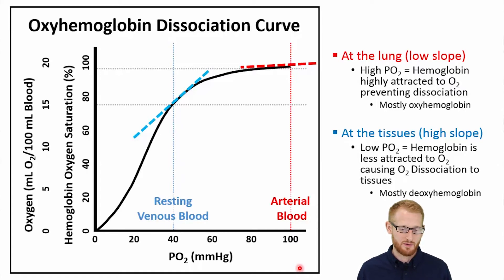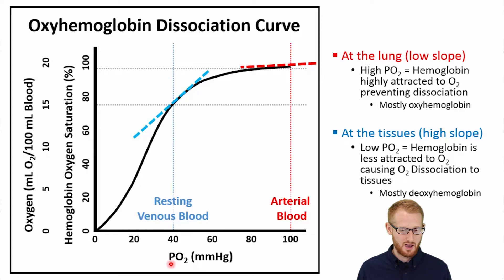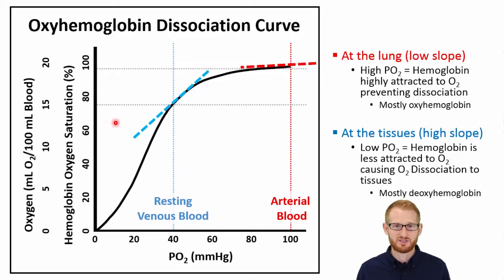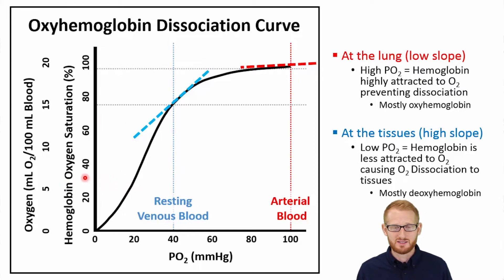When you start going further down this curve into lower partial pressures of oxygen, the slope gets steeper and steeper. Looking at the same 20 millimeter difference — from 40 to 20 mmHg — 40 is about what you'd see in the veins at rest, the partial pressure of oxygen around slightly active tissue. That same oxygen molecule at 40 mmHg has about 75 percent saturation. When it gets down to 20, we're talking around 35 percent saturation. So it went from 75 to 35 percent — a difference of 40 percent. Whereas up here, the same 20 millimeter difference in oxygen partial pressure only gets you maybe three to five percent off.